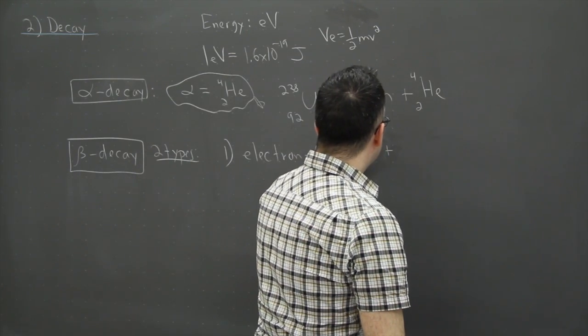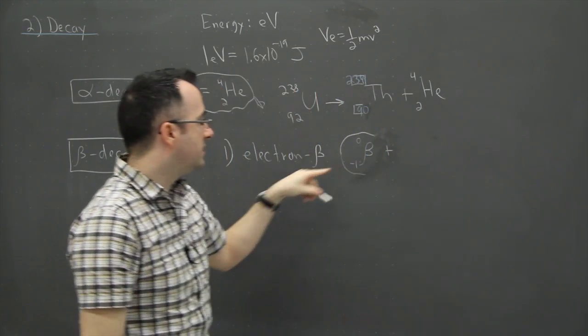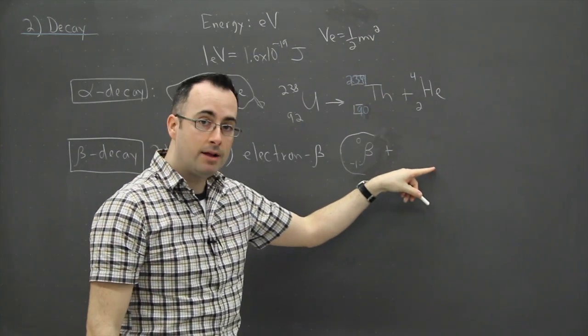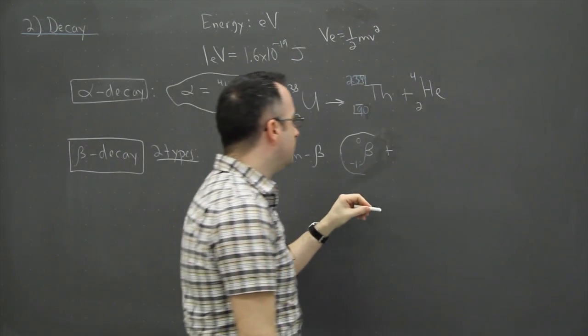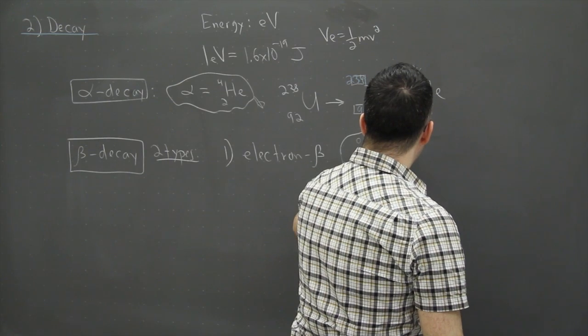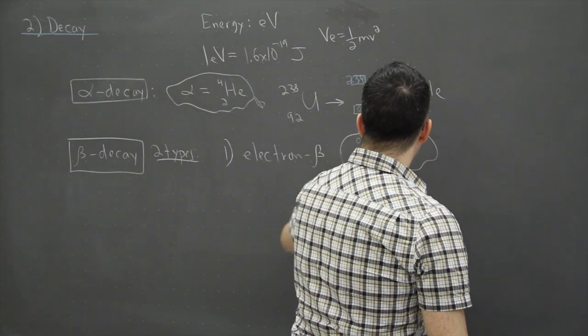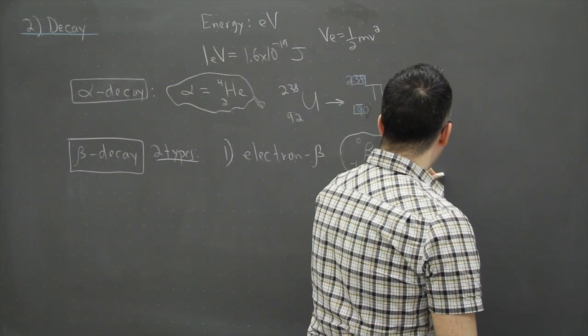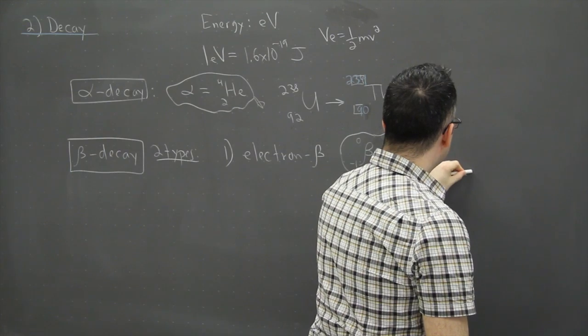But there's a sneaky little thing here that these beta decay always get something else added to them. These are really sneaky particles. These are actually called neutrinos. So that's the key right here is this right here is an anti neutrino.